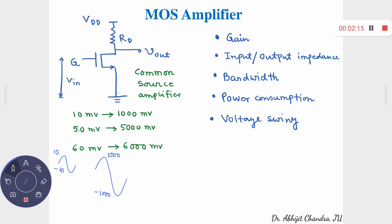Whenever you connect the input to the gate, one thing is very sure: the gate is isolated. If you consider the DC impedance, it is equal to infinity. Obviously, bandwidth will be discussed later when we move to frequency response characteristics. The different types of capacitors will be addressed later; as of now we are just considering the different types of resistances connected in this amplifier circuit.